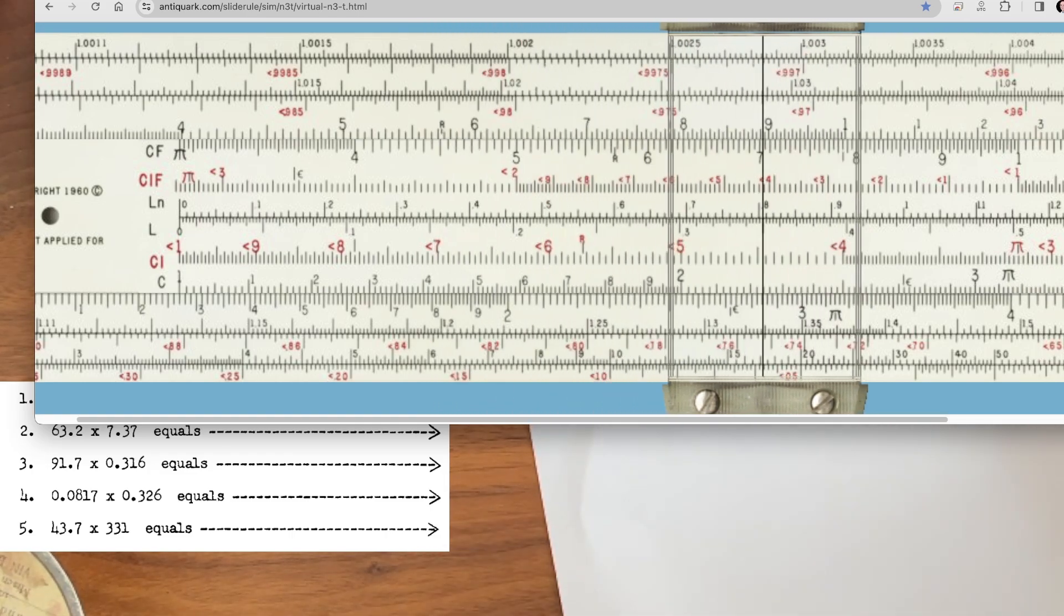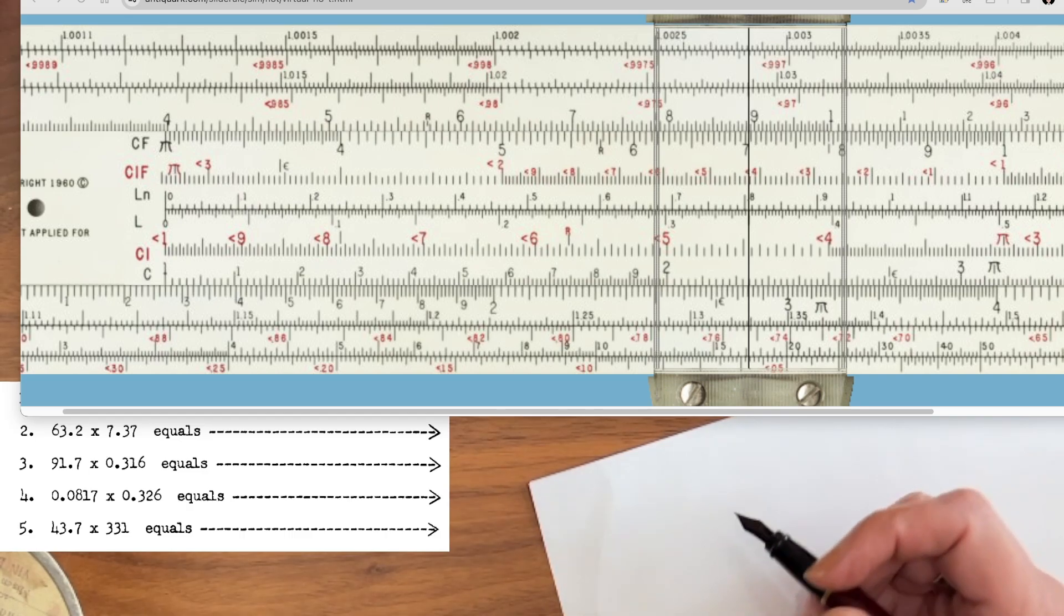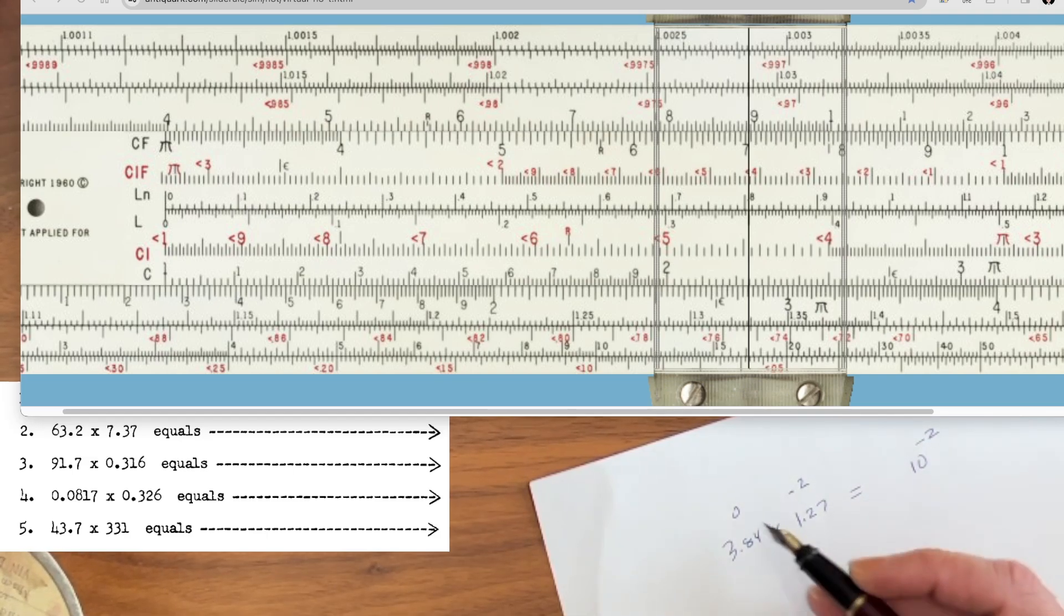So let's go ahead and tackle this first one. Right here, what we have is 3.8 times 0.0127. So let's rewrite this real quick in scientific notation. That's 3.84 times 10 to the 0 times 1.27 times 10 to the negative 2. So we would anticipate that our answer will be a 10 to the negative 2, because 0 plus negative 2 equals negative 2.